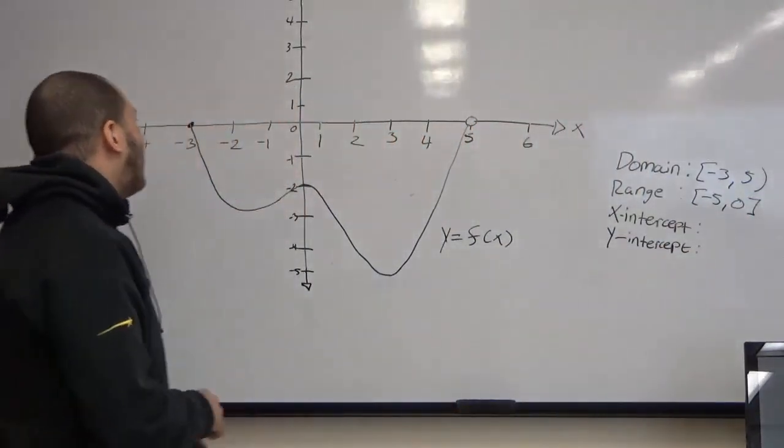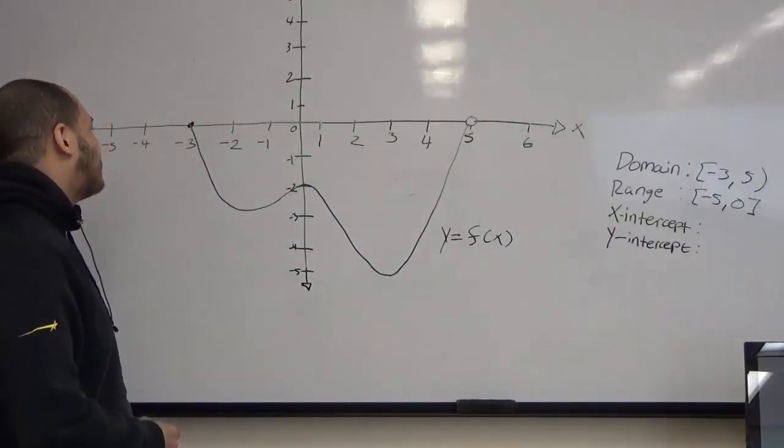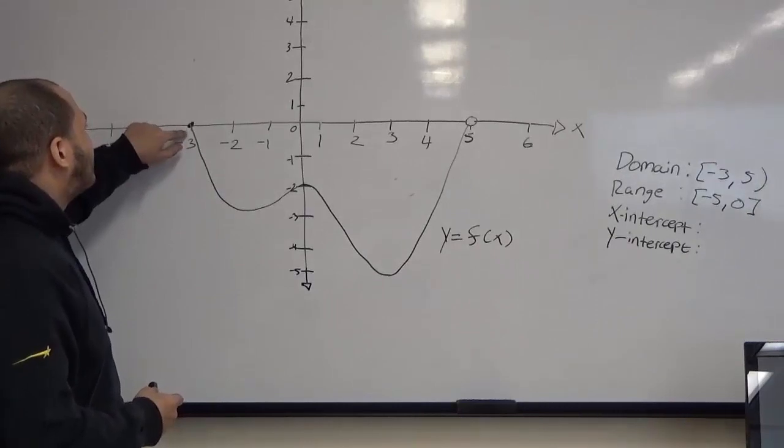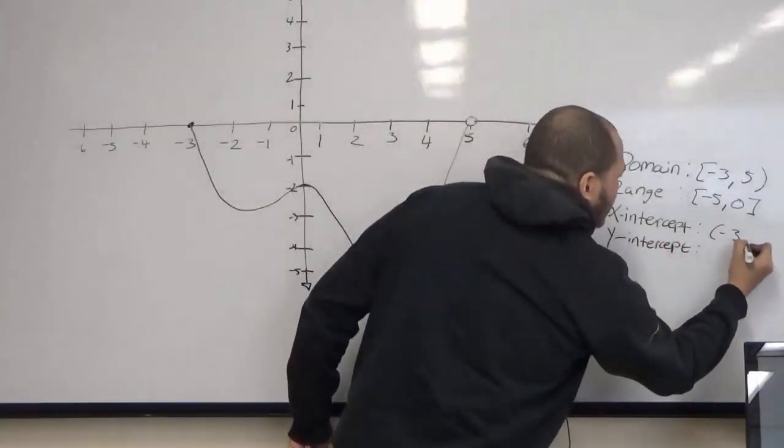Now we have to find where the graph intercepts our x and y-axis. For our x-intercept, we have clearly our closed point, negative 3, 0.